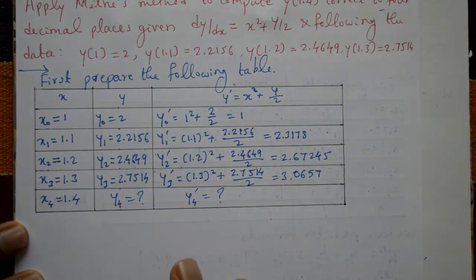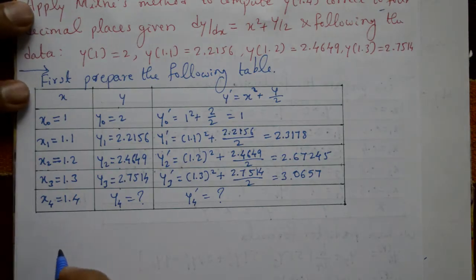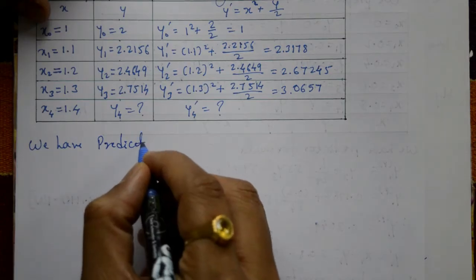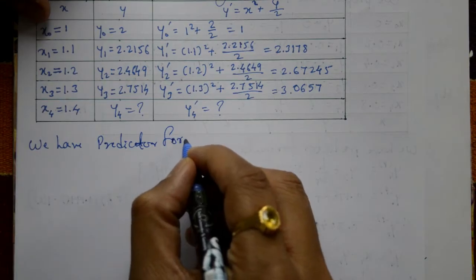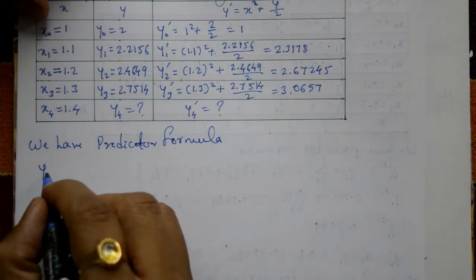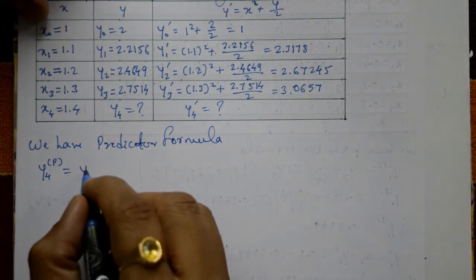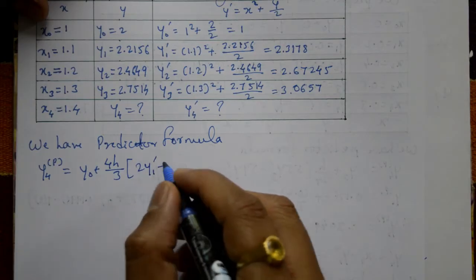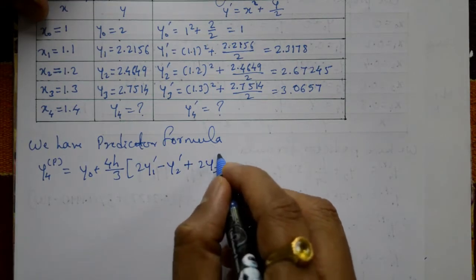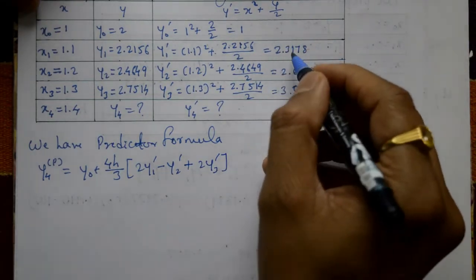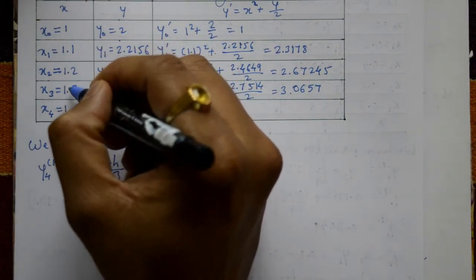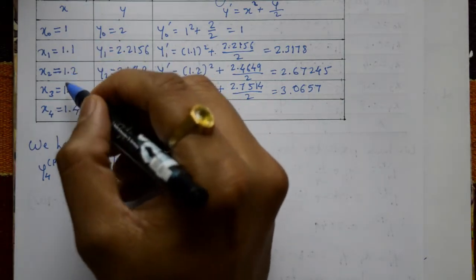Next, find y4 and y4' using Milne's method. First, apply the predictor formula: y4(p) = y0 + (4h/3)(2y1' - y2' + 2y3'). Here, h = 0.1, since the x values are equally spaced with distance 0.1.